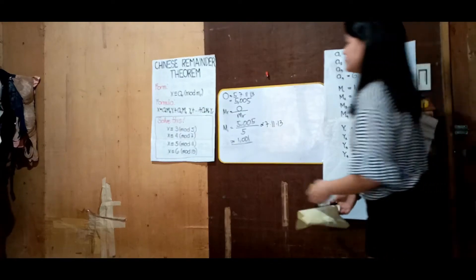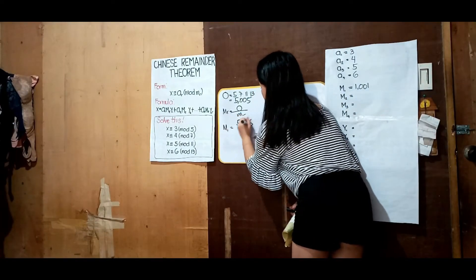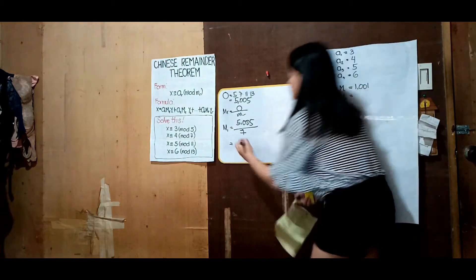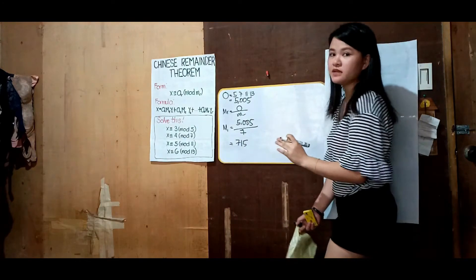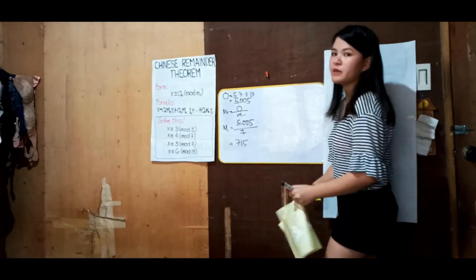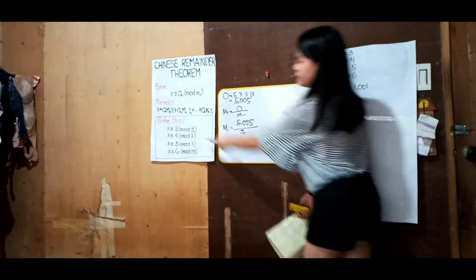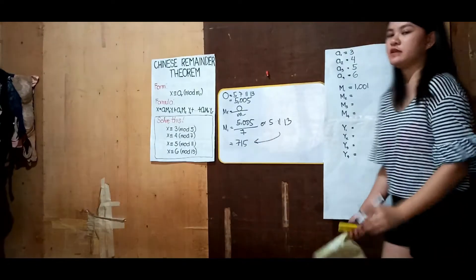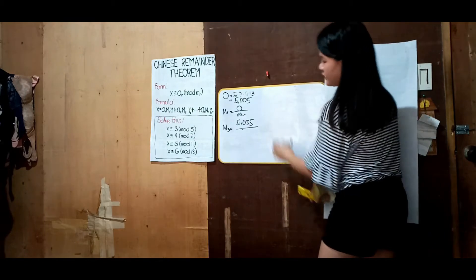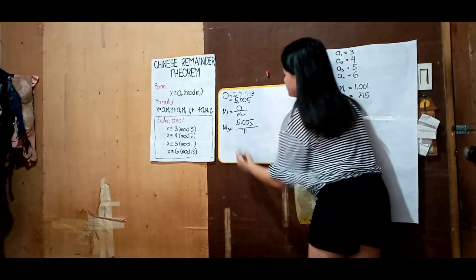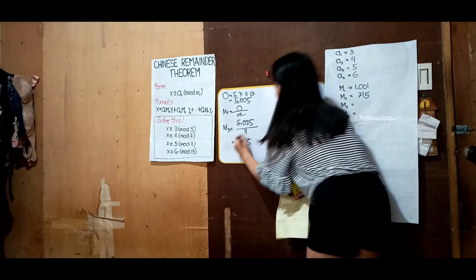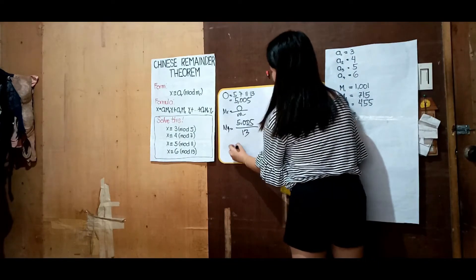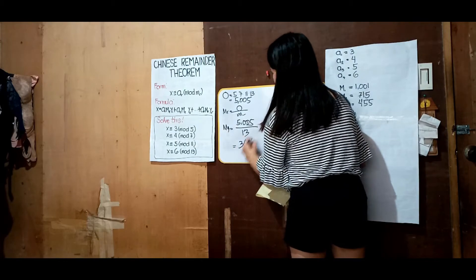Moving on, M₂ = 5005 ÷ 7 = 715. Again, 715 can be obtained by multiplying the remaining m's: 5 × 11 × 13. M₃ = 5005 ÷ 11 = 455. And M₄ = 5005 ÷ 13 = 385.